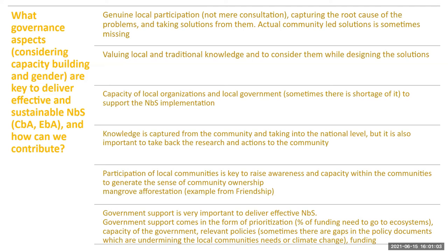Group 3 also discussed that NBS must address both human well-being and biodiversity benefits, focusing on major societal challenges such as health and poverty — the things communities actually need for empowerment. Measuring the economic, environmental, and social impact of any ground-level intervention is important, as these details are often missing from monitoring and evaluation. Government support is essential for effective NBS, but it must come in the right forms: prioritization of relevant agendas, appropriate policies, funding, and capacity — and these are often missing from top-down approaches.